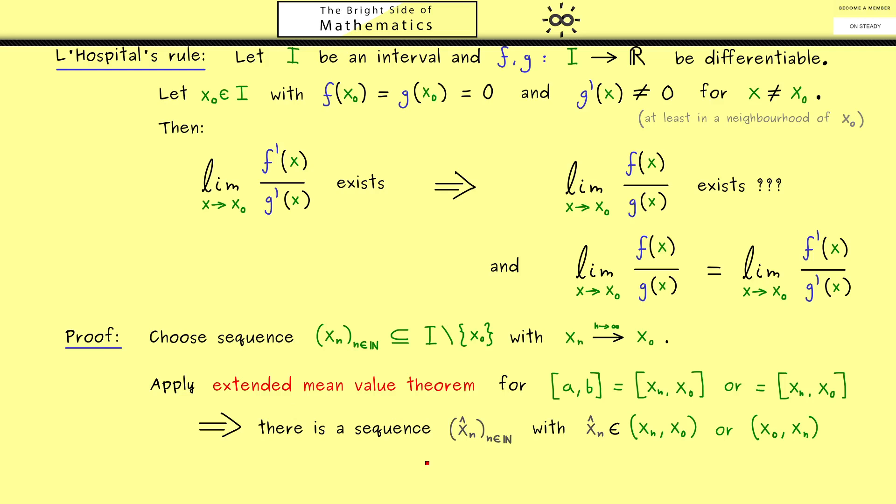And now because this works for all n in ℕ we immediately get a whole sequence out. Ok now we know every point in the sequence x̂ₙ lies between xₙ and x₀. However since we have the limit xₙ to x₀ we know this interval here gets as small as we want. Or in other words there is no other possibility than that x̂ₙ also converges to x₀.